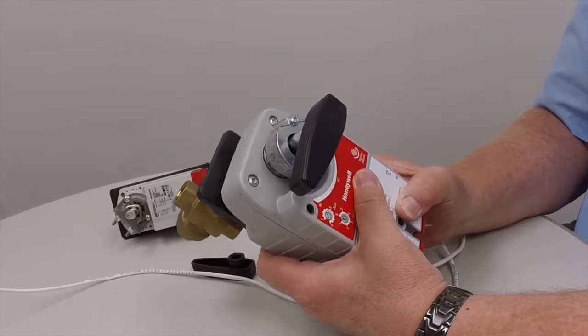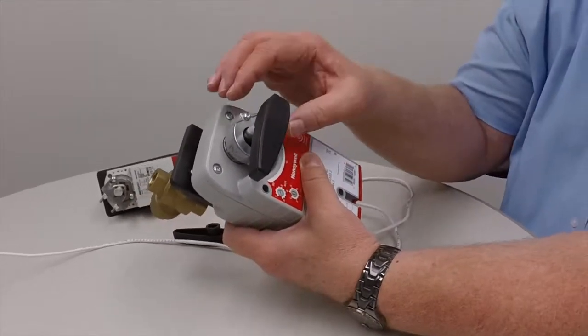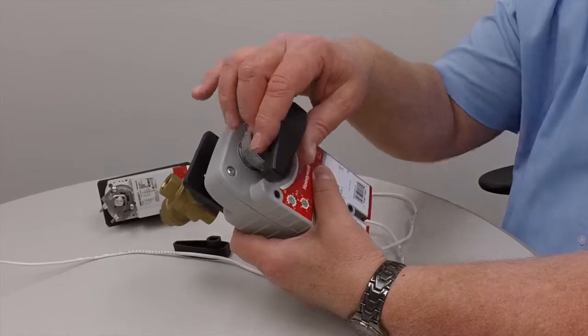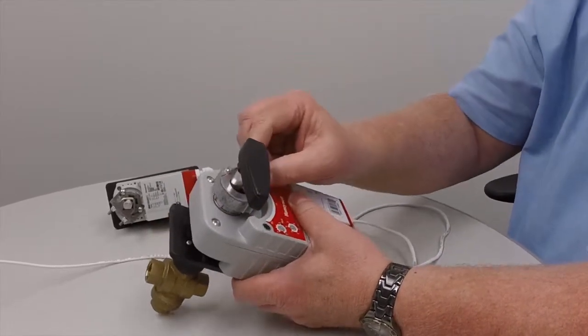So depending on where you drive the valve actuator to, then you want to position the valve stem into that position, open or closed, and then you tighten it down.